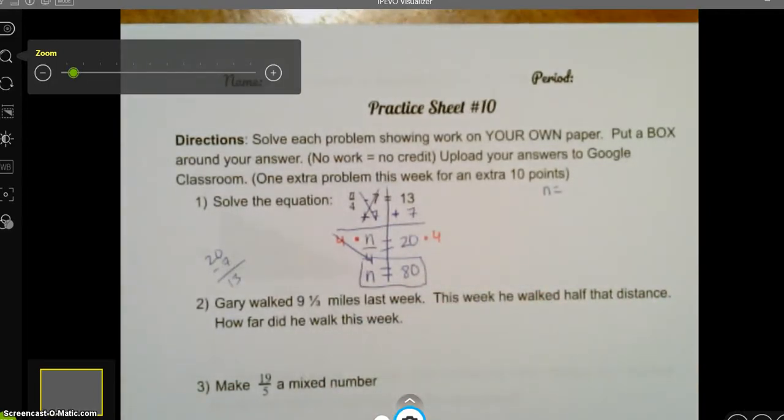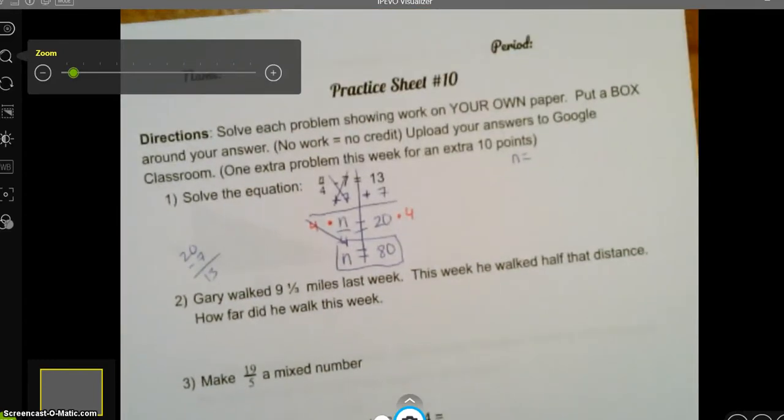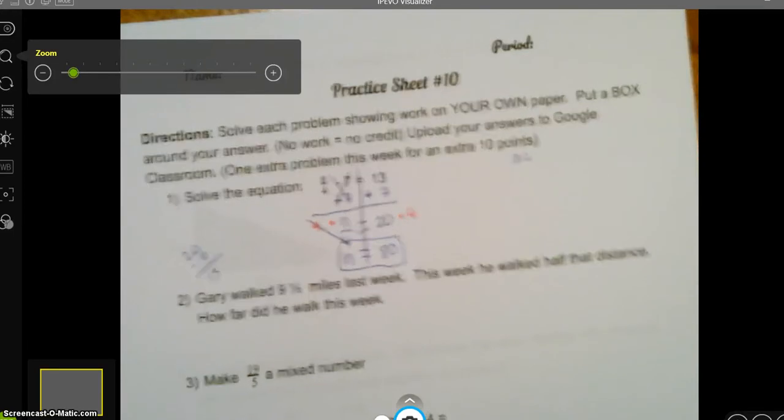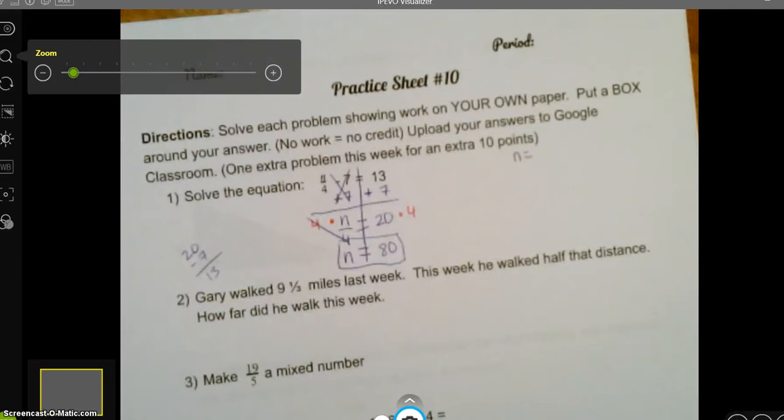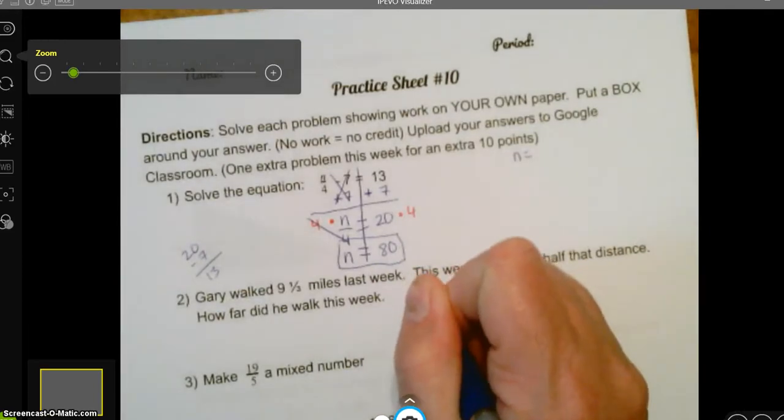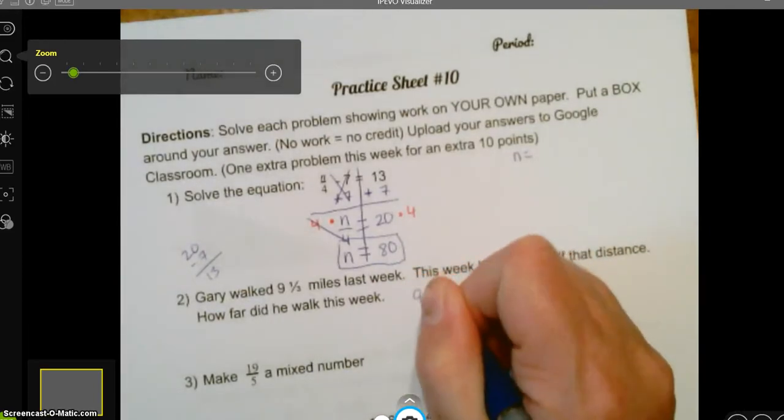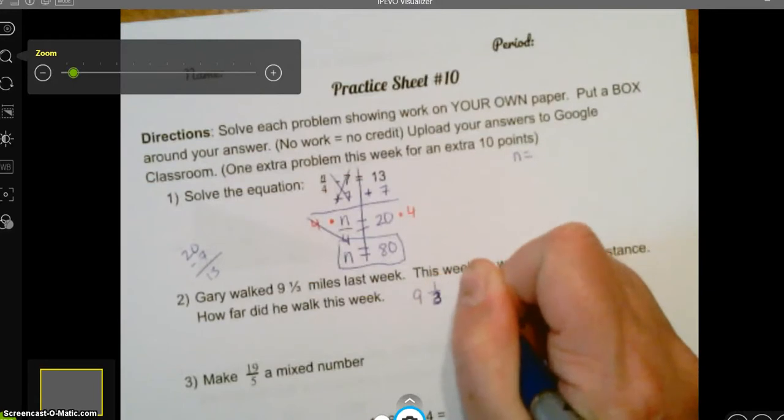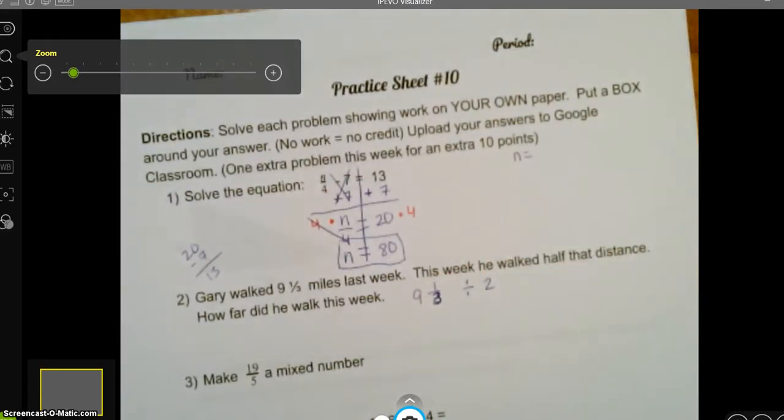Now, number 2. This is still giving people some trouble, so we're going to do it together. Gary walked 9 and 1/3 miles last week. This week, he walked half that distance. How far did he walk this week? So last week, 9 and 1/3, and remember to take half. We divide by 2. You can do that, or you can multiply by a half. Either way, it's going to end up being the same exact answer. But I think most of you relate half with dividing by 2.